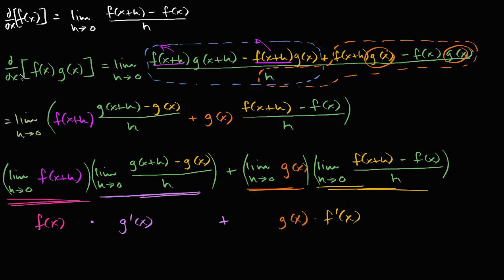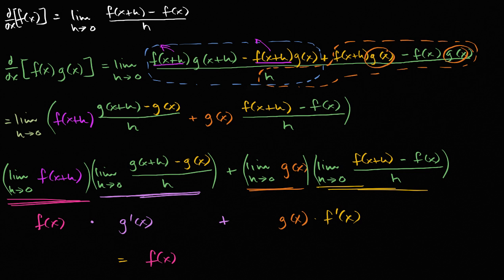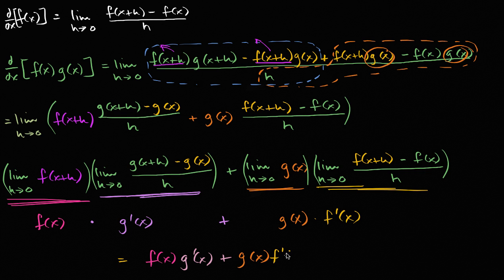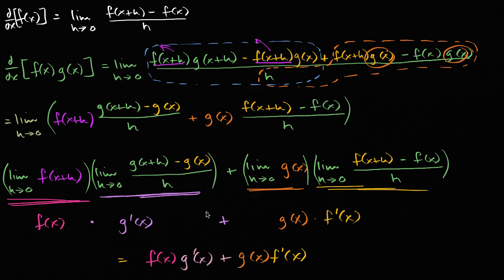So there you have it — the derivative of f of x times g of x. Written in a more condensed form, it is equal to f of x times the derivative of g with respect to x, plus g of x times the derivative of f with respect to x. Another way to think about it: it's the first function times the derivative of the second, plus the second function times the derivative of the first. This is the proof — or a proof, there are actually others — of the product rule.